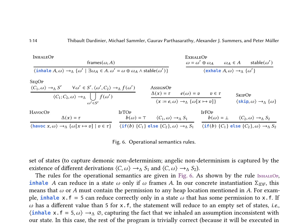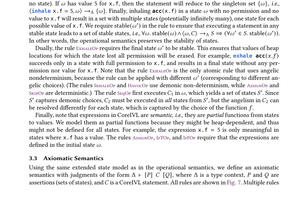Core IVL, a programming language designed for reasoning about low-level memory management, has both operational and axiomatic semantics. The operational semantics rules, as shown in Fig. 6, include inhale, exhale, and skip statements. These rules preserve the stability of states, ensuring that the language's operations maintain the integrity of the system state. The axiomatic semantics, presented in Fig. 7, uses an extended state model with judgments of the form Δ ⊢ {P} S {Q}, providing a foundation for formal verification and analysis.